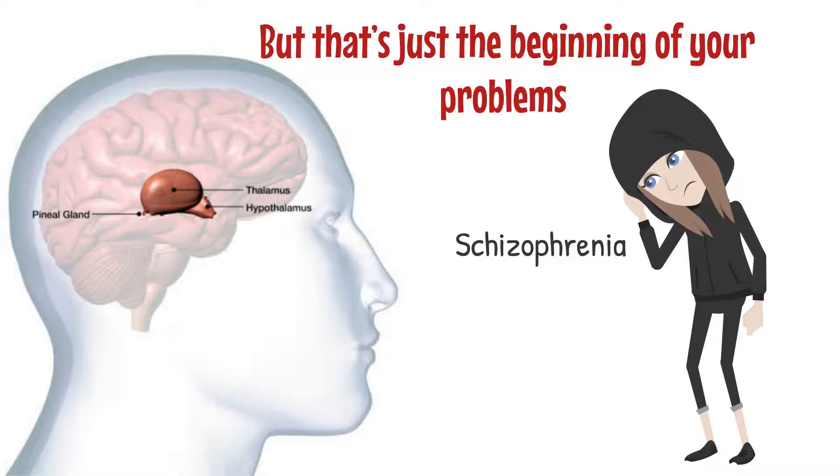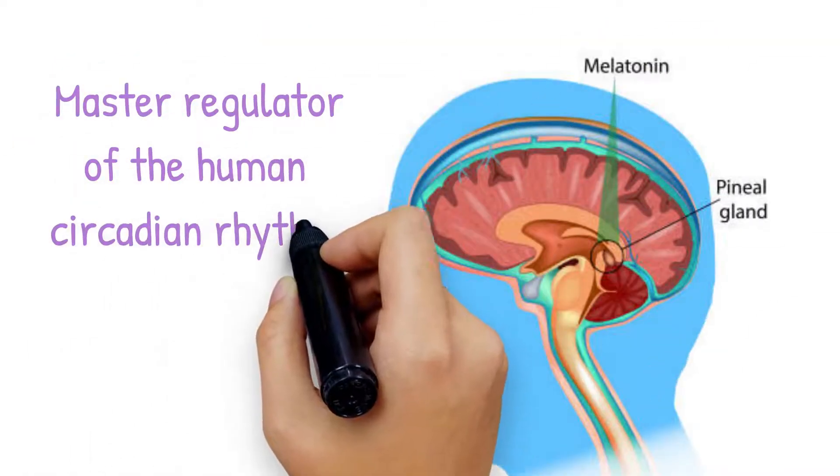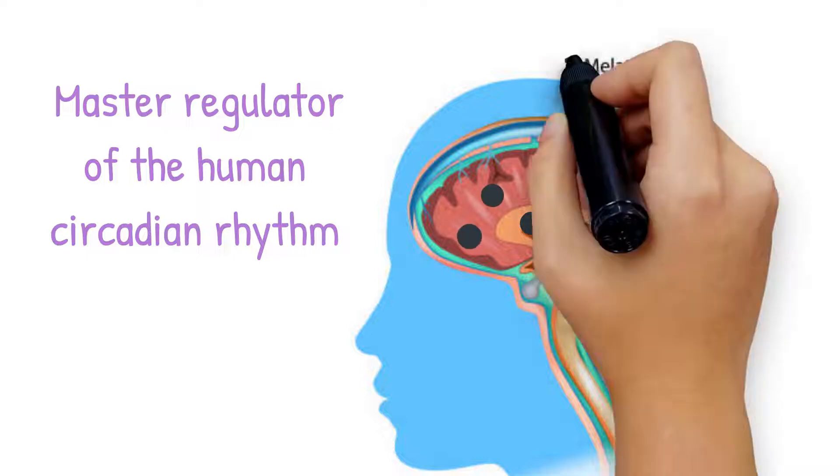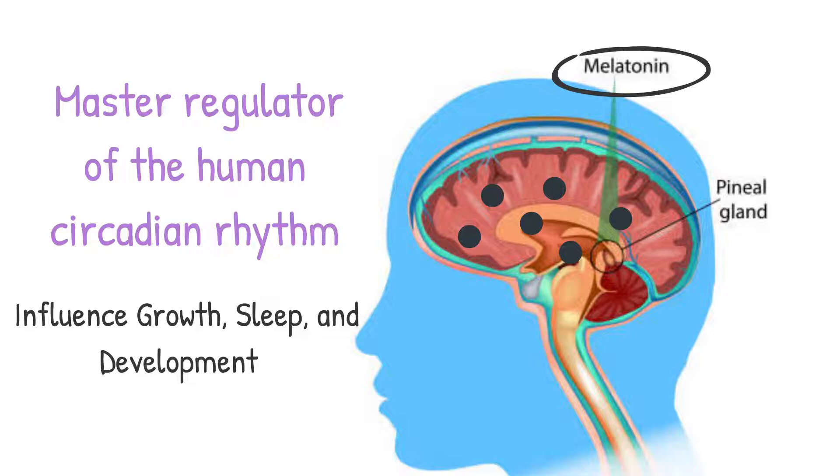But that's just the beginning of your problems. The pineal gland is the master regulator of the human circadian rhythm, producing important hormones like melatonin that influence growth, sleep, and development. Except when things go haywire.